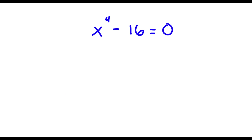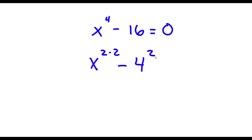Alright, so I have x to the power of 4 minus 16 is equal to 0. Now to start, x to the power of 4 is the same thing as x to the power of 2 times 2, because 4 is 2 times 2. And 16 is the same thing as 4 to the power of 2. So I have x to the power of 2 times 2 minus 4 to the power of 2 is equal to 0.